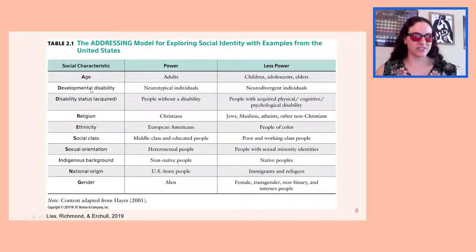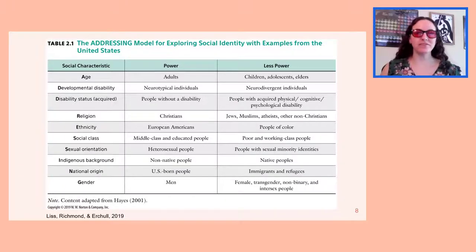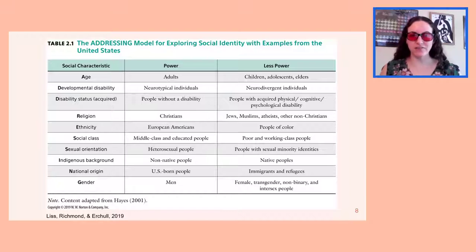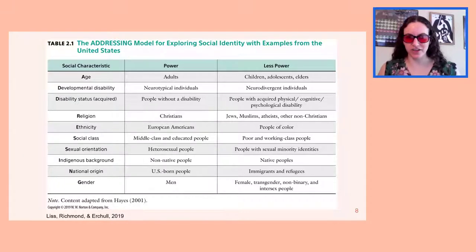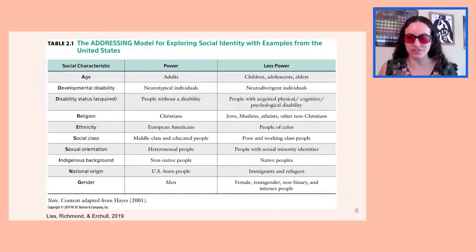Another social characteristic is developmental disability. Who's in power? Who gets to make the rules and the laws? People who are neurotypical. People who have less power are those who are not neurotypical — for instance, those who have autism. And yet, who gets to make the rules on who's able to represent themselves, whether they have autism or Down syndrome?